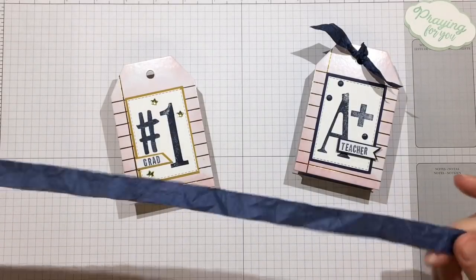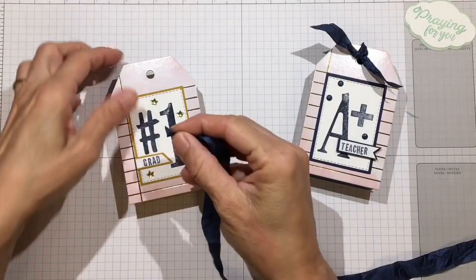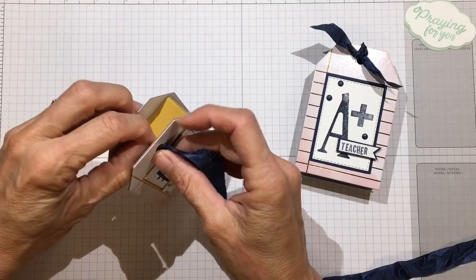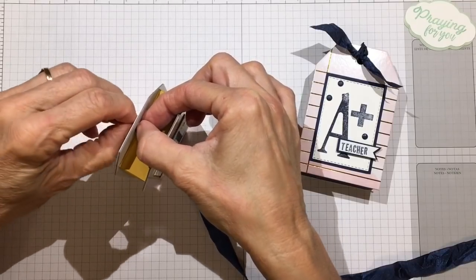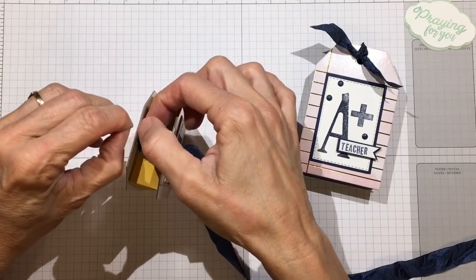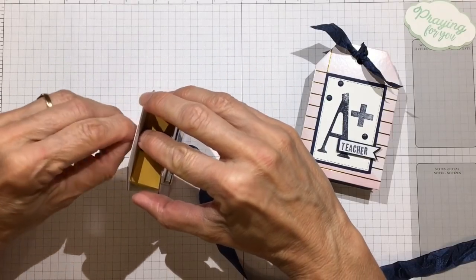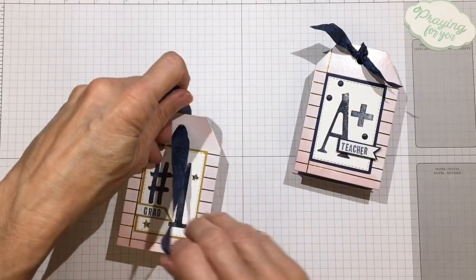I'm using some of this crinkled ribbon I had left over. This is actually my very last piece of Night of Navy so I'm using it up. You could fit money in here as well if you're giving a cash present to your graduate.